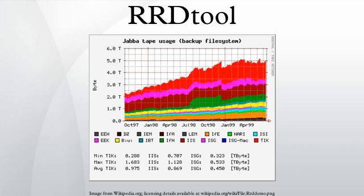To cover several time spans and/or use several consolidation functions, an RRD file may contain multiple RRAs. The data retrieval function of RRTool automatically selects the archive with the highest resolution that still covers the requested time span. This mechanism is also used by RRTool's graphing subsystem.